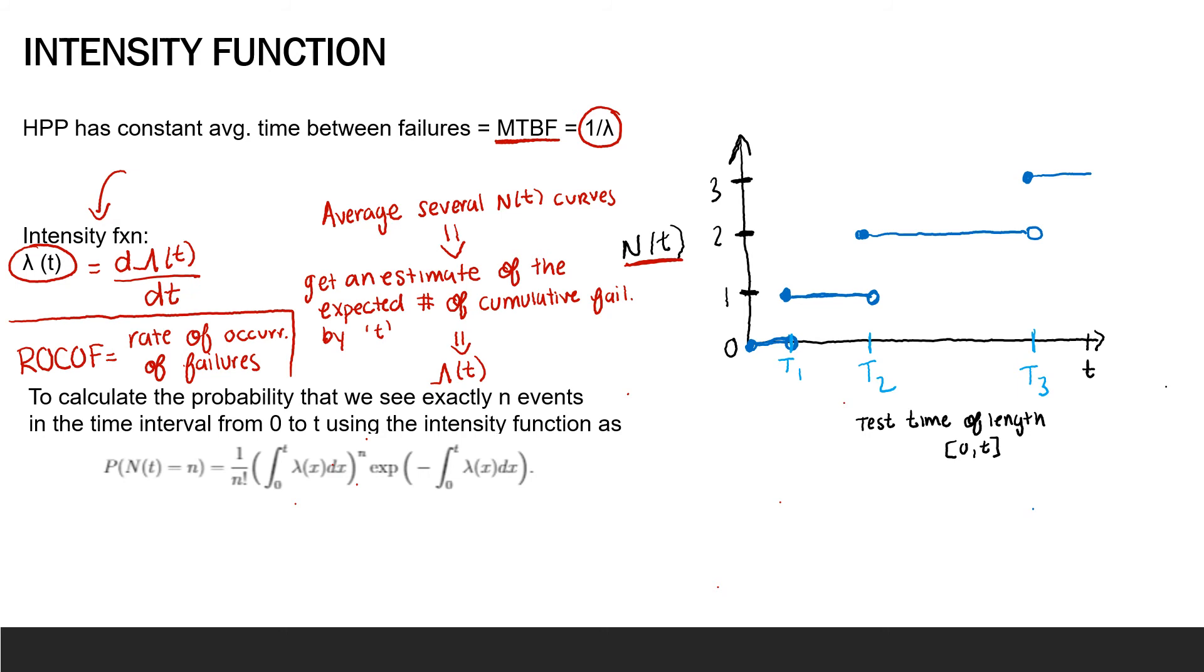Now we haven't even talked about probability as it relates to this intensity function. For those of you who are mathematically inclined, we calculate the probability we see exactly n events in the time interval from 0 to t using the intensity function. So the intensity function appears in this probability calculation here and here. Now if lambda of x in this probability calculation just equals lambda, so in other words, it's constant, this is just our old friend the Poisson distribution with mean lambda times t.